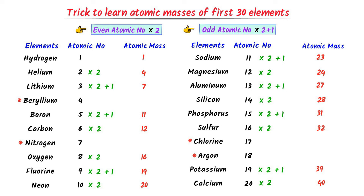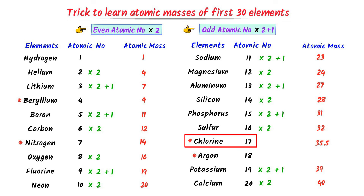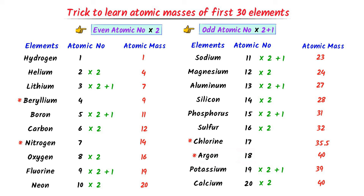Now I write the atomic masses of the remaining 4 exception elements. The atomic mass of beryllium is 9, that of nitrogen is 14, that of chlorine is 35.5, and that of argon is 40. Thus, using this trick, we can easily write the atomic masses of the first 20 elements of the periodic table.